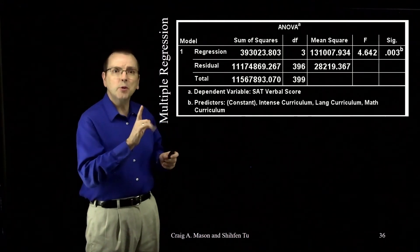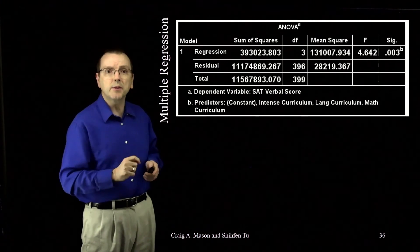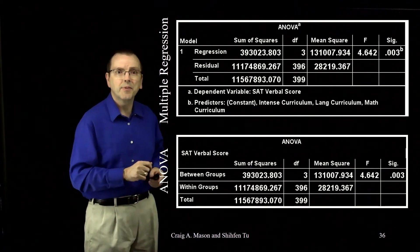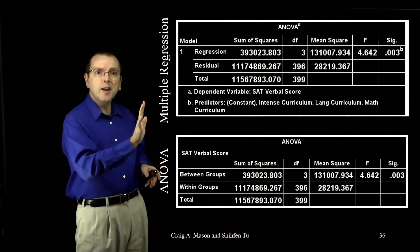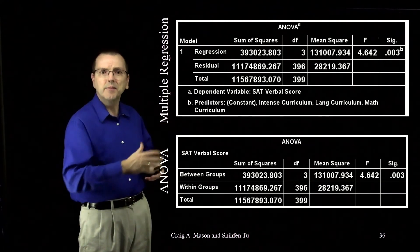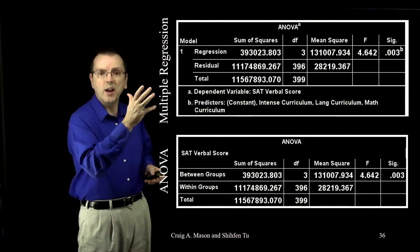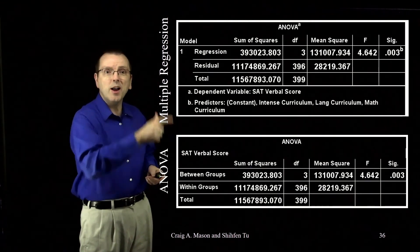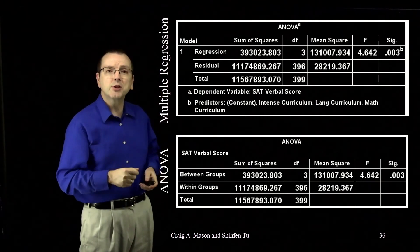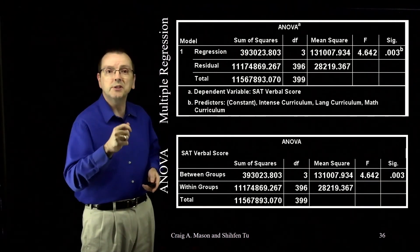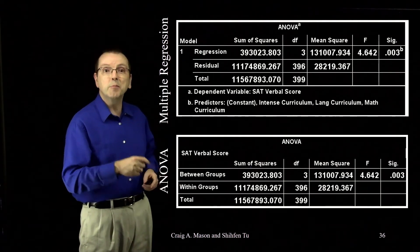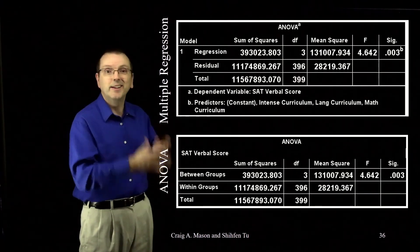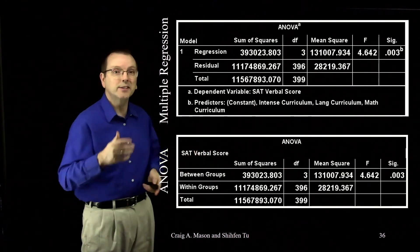Let me also put up the ANOVA table that we previously ran, the one-way analysis of variance. Notice that the numbers are the same. The only difference between our multiple regression ANOVA table and the one-way analysis of variance ANOVA table is what we're calling the sum of squares. In the multiple regression, we're referring to them as the regression and residual sum of squares, but they're labeled the between groups and within groups sum of squares when we did the one-way ANOVA. But it's the same thing. The numbers are all exactly the same.